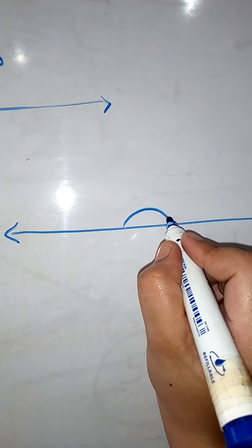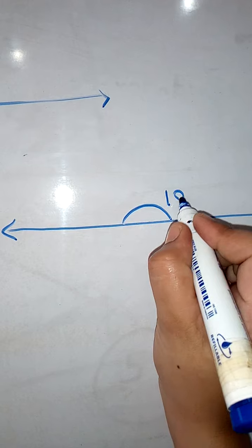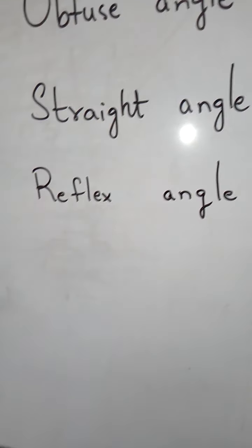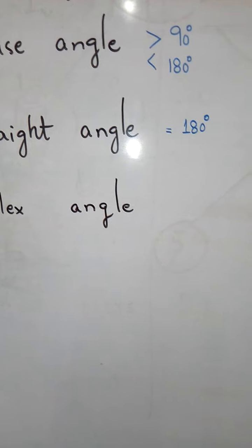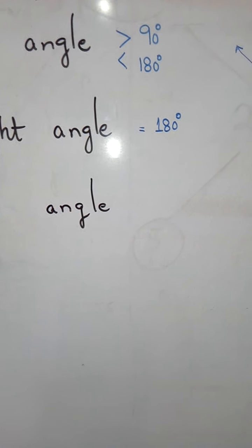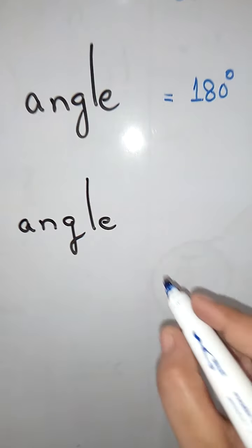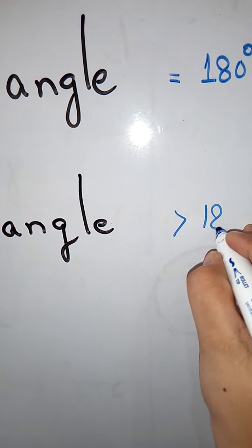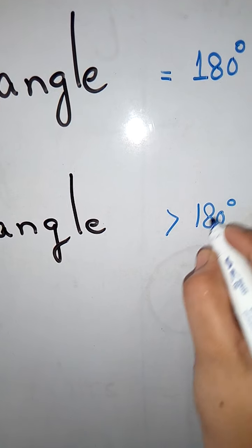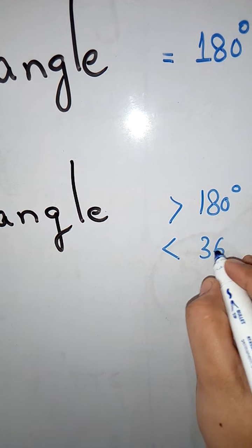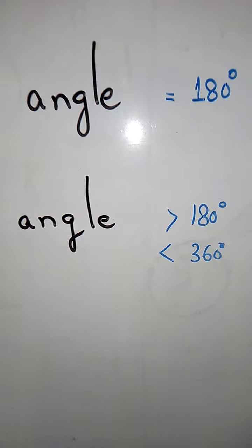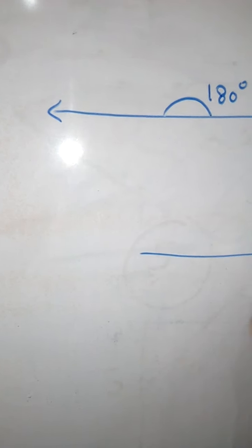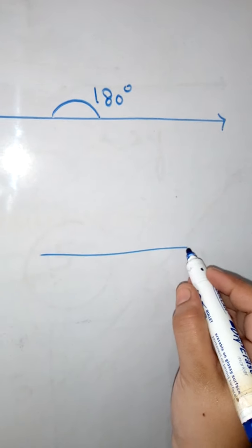The last type is the reflex angle. A reflex angle is always greater than 180 degrees but always less than 360 degrees, and its figure looks like this.